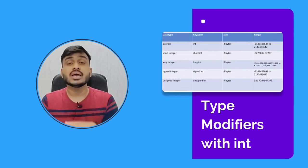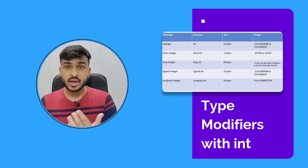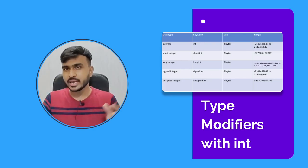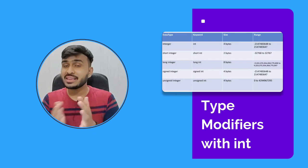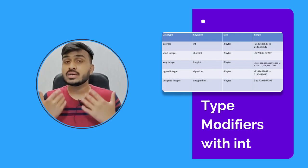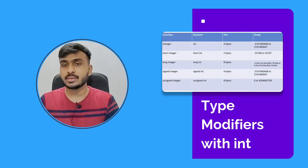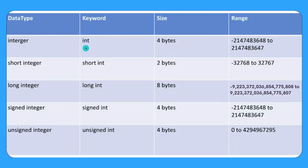Now let's see how type modifiers behave with the integer data type. I'm going to show you a table explaining this. By default, the keyword for int is int, its size is 4 bytes, and the range goes from a minimum to a maximum value. The range is derived from the size of the data type.